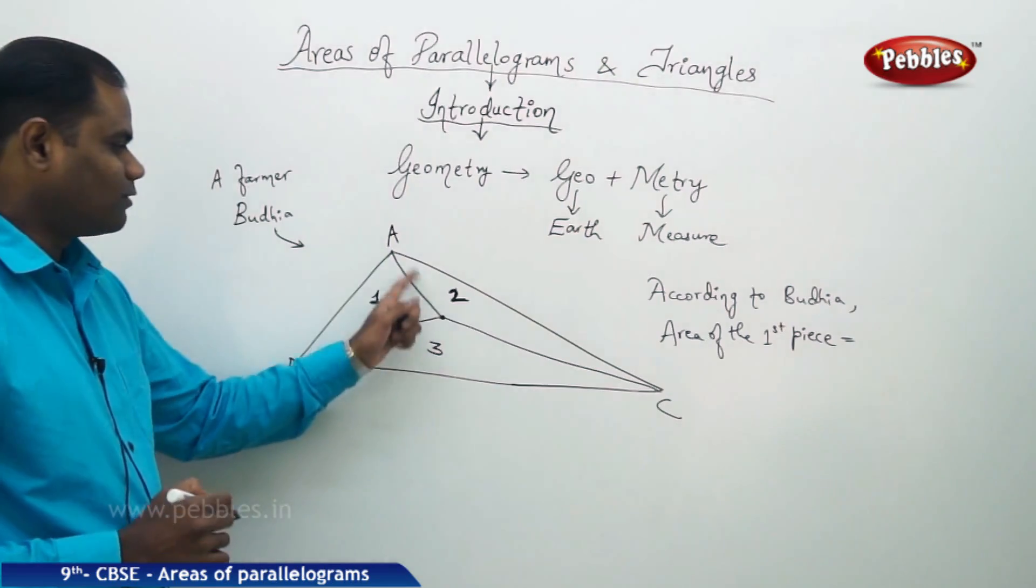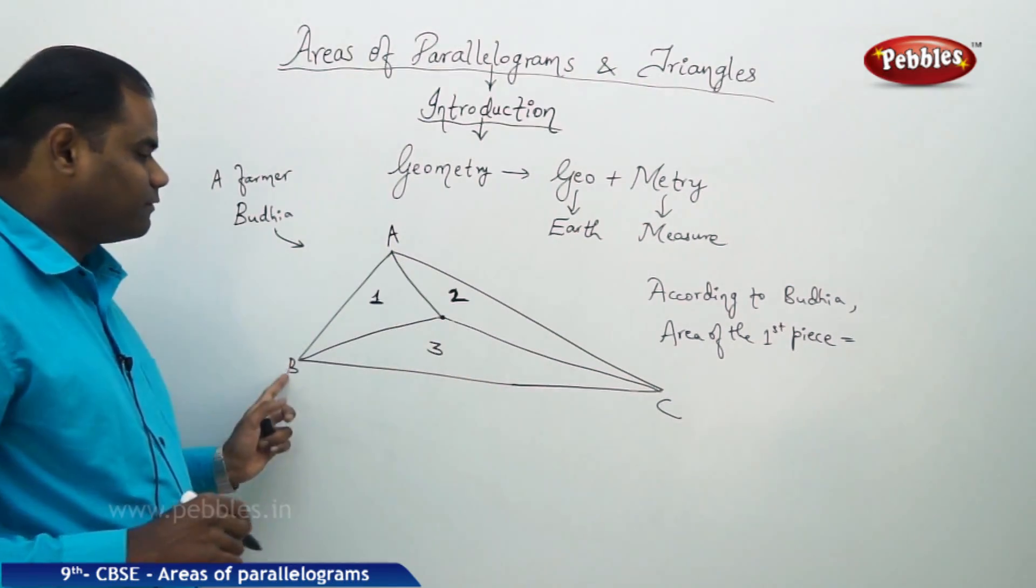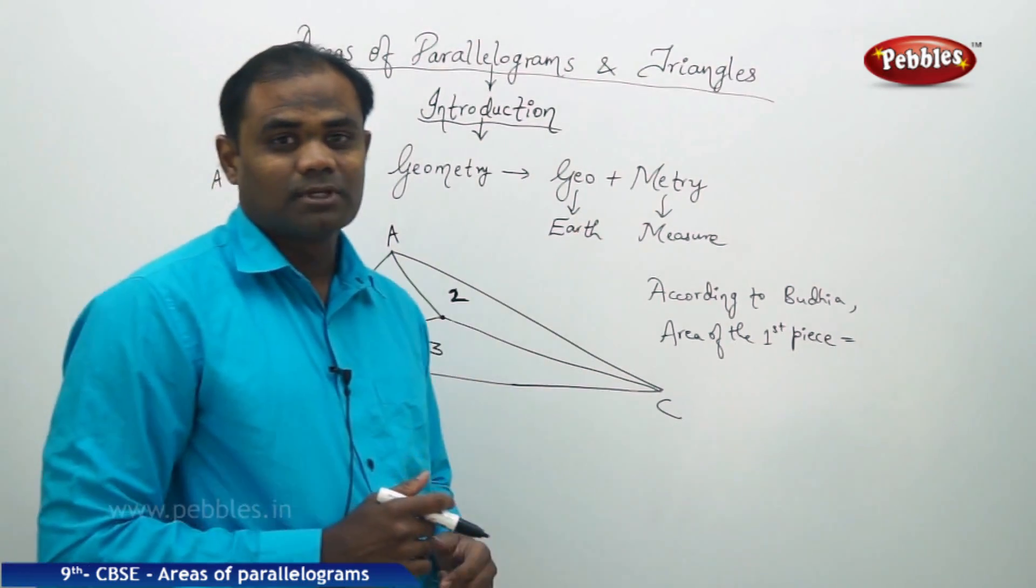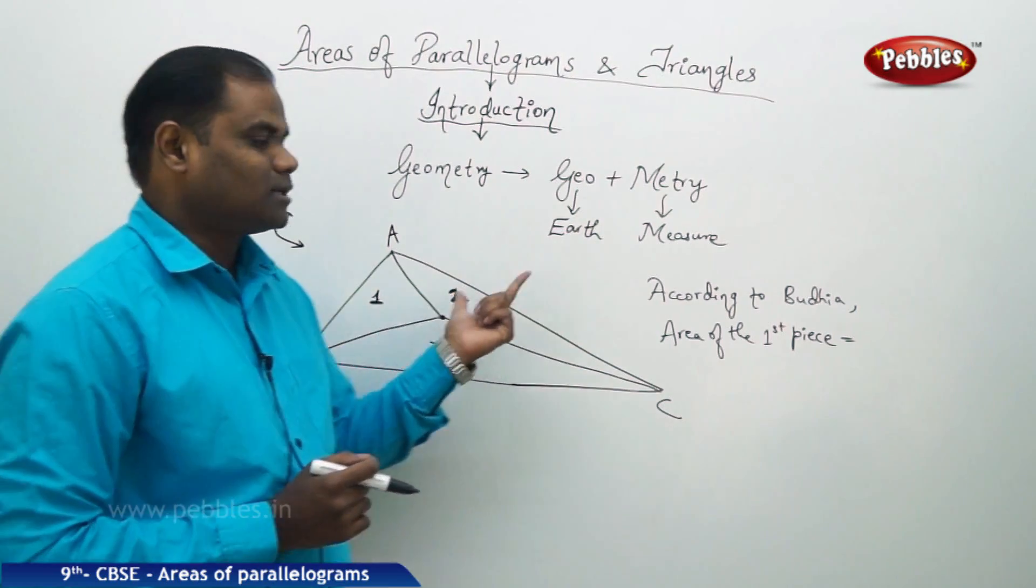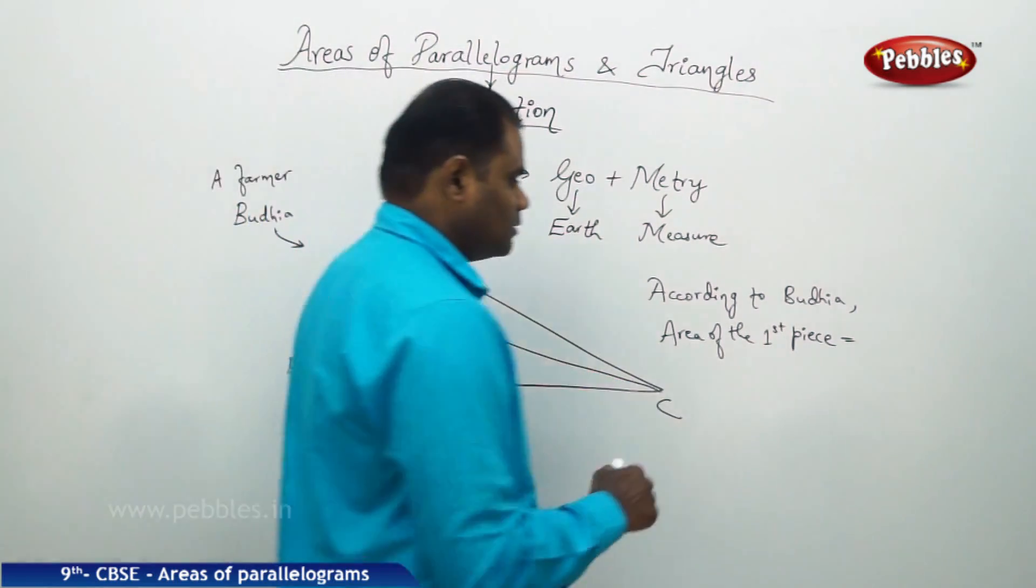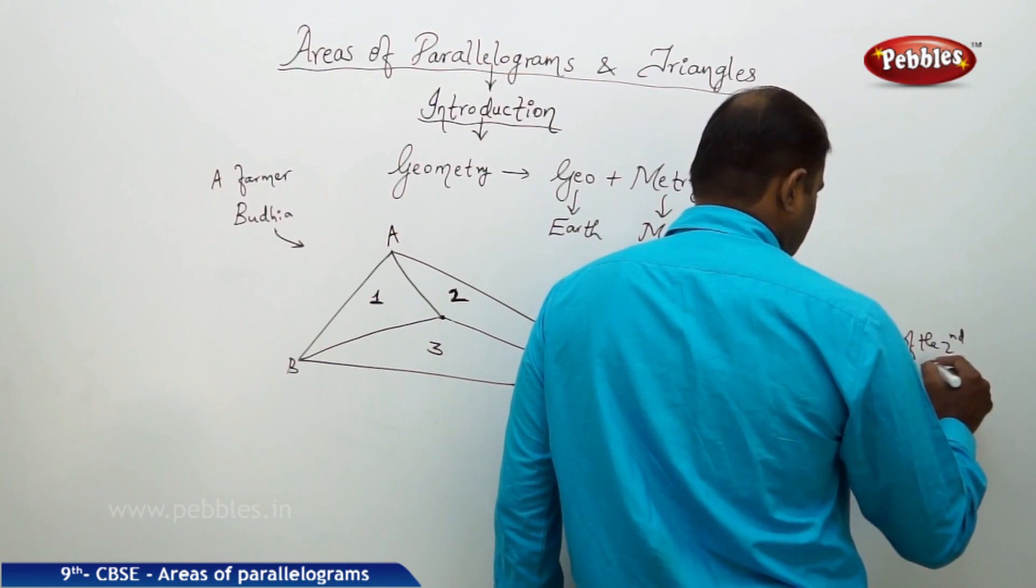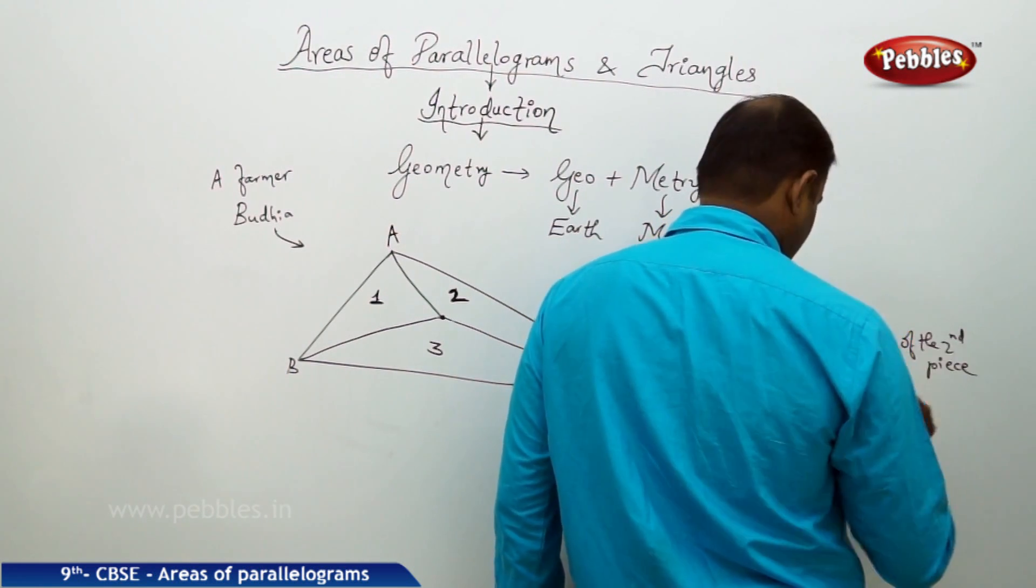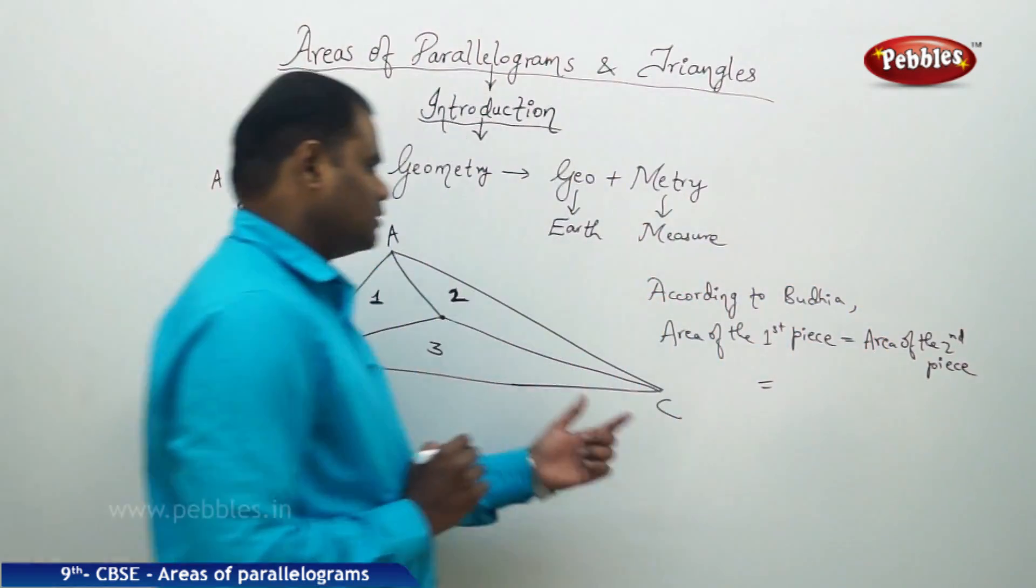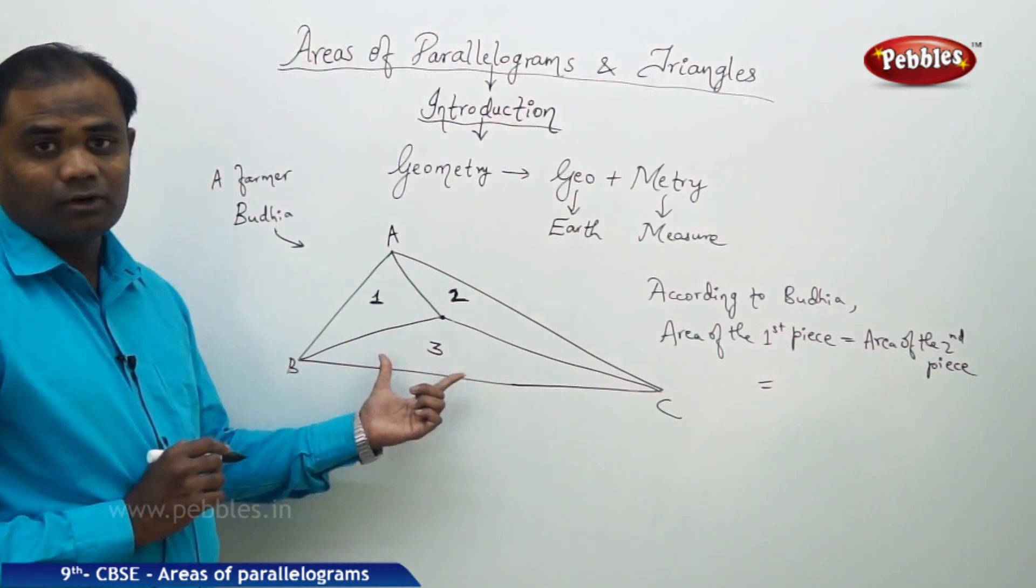...is equal to area of the second piece. Though they are in different shapes, it is assumed that area of the first piece is equal to area of the second piece, and also this is equal to area of the third piece.